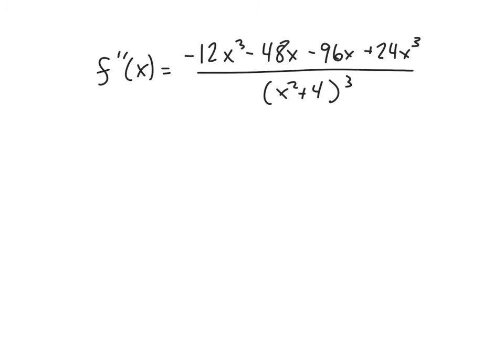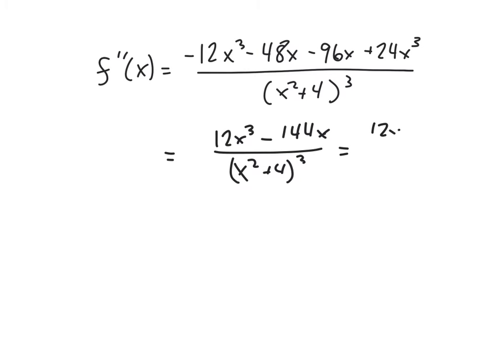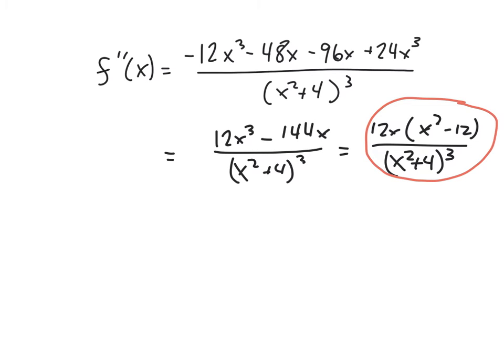Combining like terms in the numerator: negative 12x cubed plus 24x cubed gives 12x cubed, and negative 48x minus 96x gives negative 144x. So f double prime of x equals 12x cubed minus 144x over x squared plus 4 cubed. Factoring out 12x gives 12x times x squared minus 12 over x squared plus 4 cubed. Now it's easy to see where this equals zero: x equals 0 and x equals plus or minus the square root of 12.